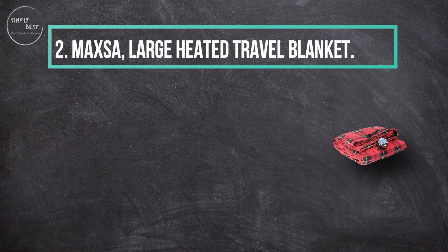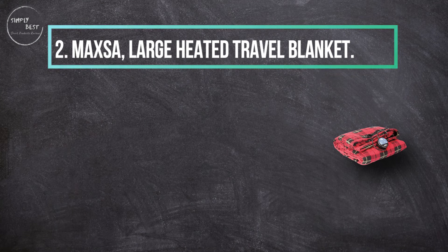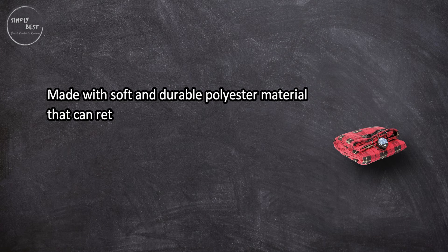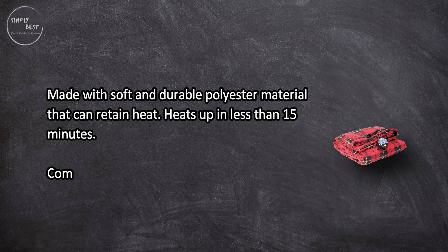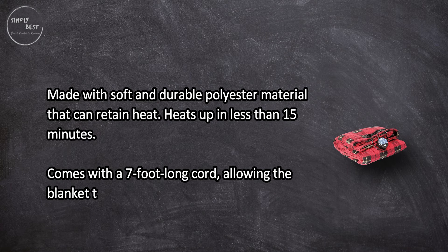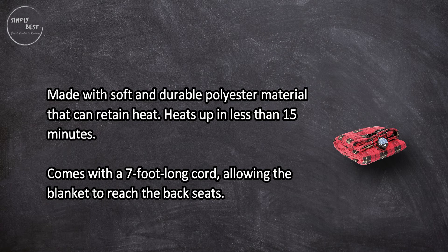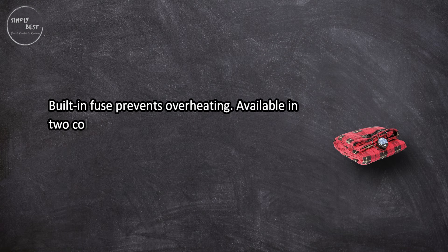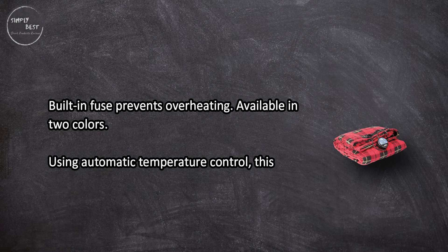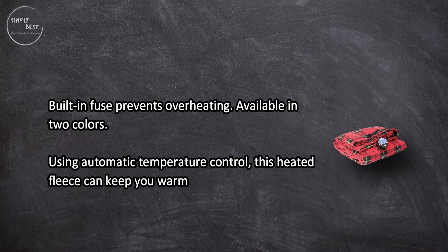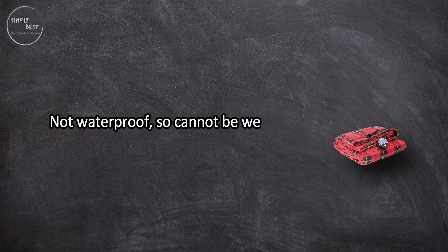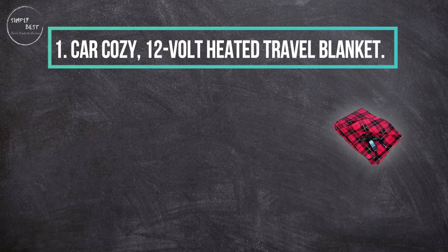At number two, Maxsa Large Heated Travel Blanket. Made with soft and durable polyester material that can retain heat, heats up in less than 15 minutes. Comes with a seven-foot long cord allowing the blanket to reach the back seats. Built-in fuse prevents overheating, available in two colors. Using automatic temperature control, this heated fleece can keep you warm on long road trips. Not waterproof, so cannot be wetted or machine washed. At number one, Car Cozy 12-volt heated travel blanket.